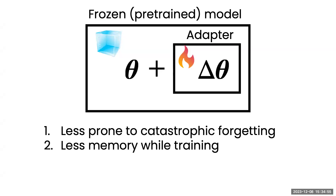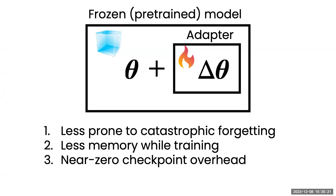Another advantage is memory cost. When training model parameters, you need extra memory to keep track of activations for backpropagation, and for momentum methods like Adam you also need to store means and variances. If you minimize the number of parameters being trained, you have much less memory cost at training time.